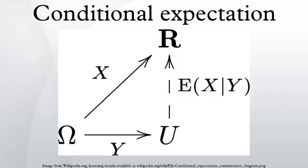In probability theory, the conditional expectation of a random variable is another random variable equal to the average of the former over each possible condition. In the case when the random variable is defined over a discrete probability space, the conditions are a partition of this probability space. This definition is then generalized to any probability space using measure theory. Conditional expectation is also known as conditional expected value or conditional mean. In modern probability theory, the concept of conditional probability is defined in terms of conditional expectation.